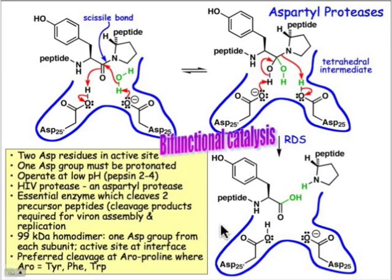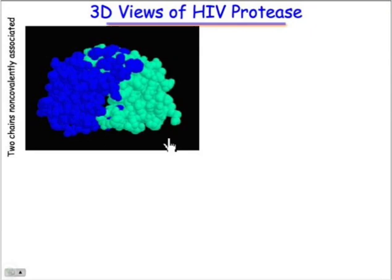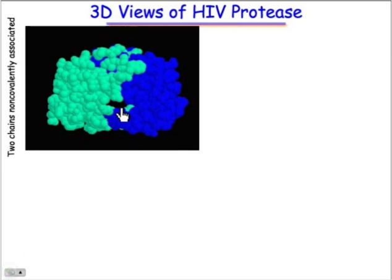Let's take a look at the three-dimensional structure of the HIV protease. It's a fascinating structure. We'll see the two different protein chains are colored differently in this space-filling model. And if we take a view where we spin this around, there's a side-on view. Looking at the front view, we can see that there's a cavity that is where the active site is, and this cavity goes all the way through from one side to the other.